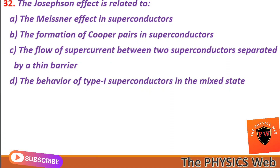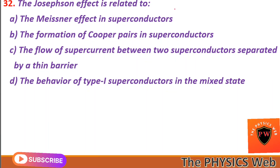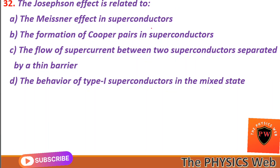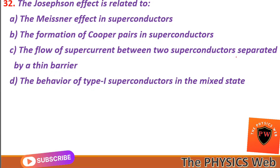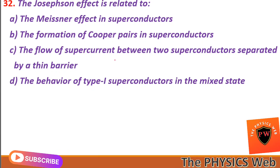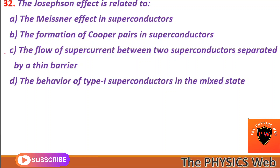Next, question thirty-two: the Josephson effect is related to the flow of supercurrent between two superconductors separated by a thin barrier. So C is your correct option.